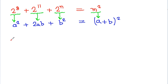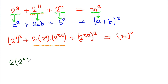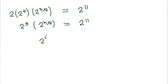Using the identity (a plus b) squared equals a squared plus 2ab plus b squared, we write 2 to the power 8 as (2 to the power 4) squared, with 2ab equal to 2 times (2 to the power 4) times (2 to the power n over 2), and b squared equal to (2 to the power n over 2) squared equals m squared. The middle term 2 times (2 to the power 4) times (2 to the power n over 2) must equal 2 to the power 11. This gives 2 to the power 5 times 2 to the power (n over 2) equals 2 to the power 11, so 2 to the power (n over 2) equals 2 to the power 6. Therefore n over 2 equals 6, and the value of n is 12.